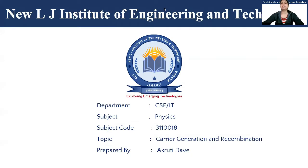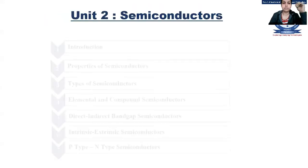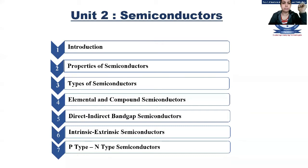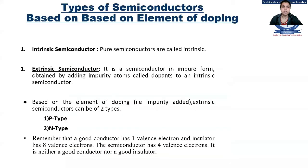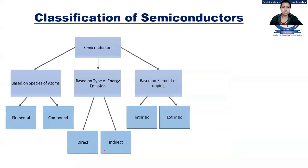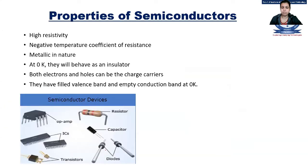In the last session we covered basic concepts of Unit 2. We started with the properties of semiconductors, then the types: elemental and compound, direct and indirect bandgap semiconductors, and intrinsic and extrinsic semiconductors. We also saw the classification of extrinsic semiconductors in terms of p-type and n-type. The basic properties covered included high resistivity and negative temperature coefficient.